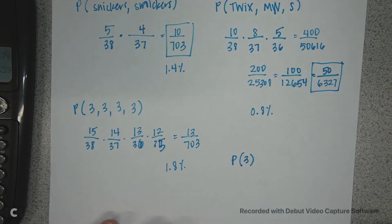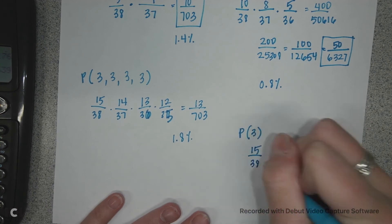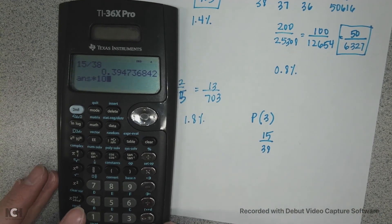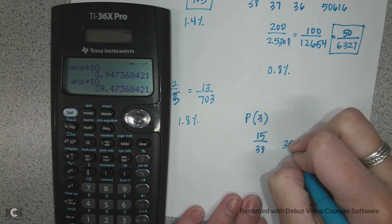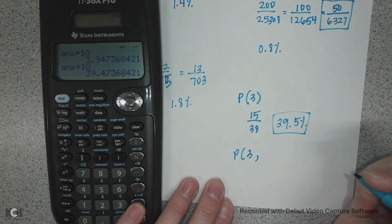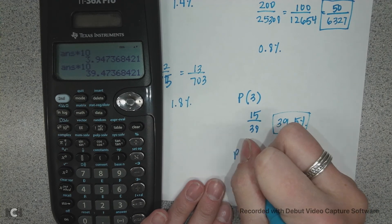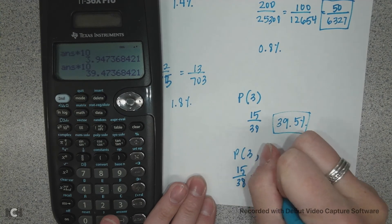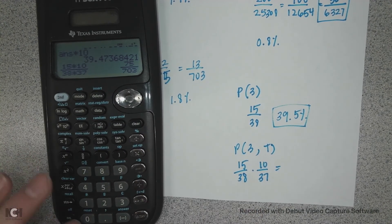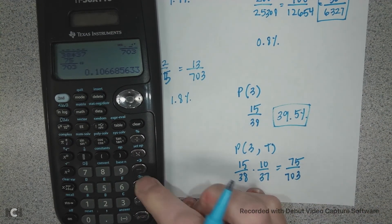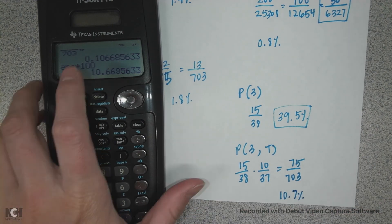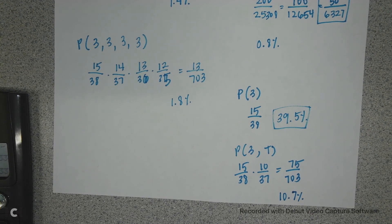Let's compare: the probability of getting a single Three Musketeer is 15/38, which is about 39.5% — much higher on its own. Then the probability of a Three Musketeer and then a Twix is 15/38 times 10/37, which is 75 over 703, or about 11%. That's how you do probability without replacement. If you have any questions, let me know — have a great day!